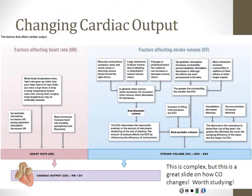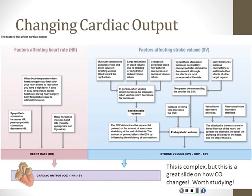Last time we started putting together some of these different terms and variables in how the body regulates blood pressure and blood flow. One of the things we talked about extensively was cardiac output — the amount of blood the heart pumps per minute. We can calculate cardiac output as stroke volume times heart rate: how much blood the heart pumps out per beat, and how many times it beats per minute. Ultimately, blood pressure equals cardiac output times total peripheral resistance.